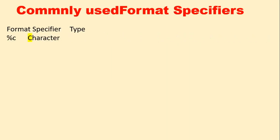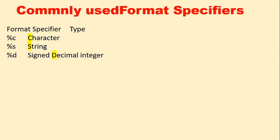Now let's see some commonly used format specifiers in C language. %c stands for character — a single character. %s stands for string, which is a combination of characters. %d stands for signed decimal integer. Our number system base is 10, so we call it the decimal number system. %c, %s, and %d are the ones we use most regularly.